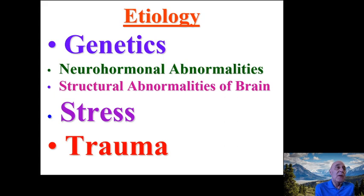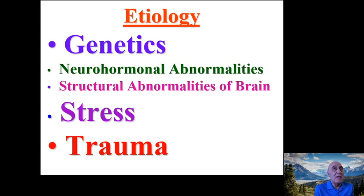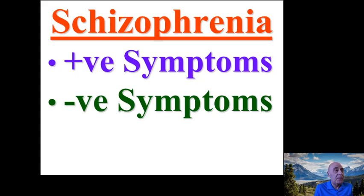Schizophrenia can also be due to abnormalities in the neuro-hormonal system, structural abnormalities in the brain, stress, or trauma. Particularly, patients who have experienced a car accident and brain injury may develop schizophrenia. Schizophrenia is associated with two kinds of symptoms: positive symptoms and negative symptoms.